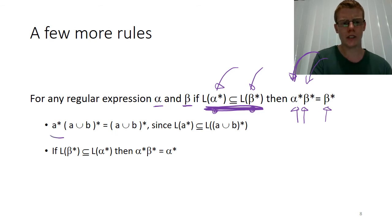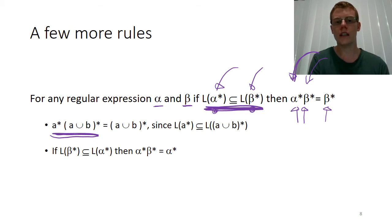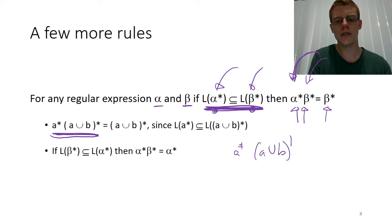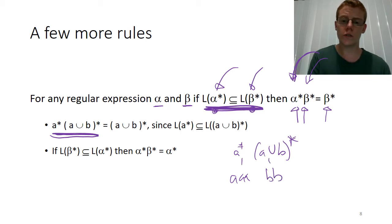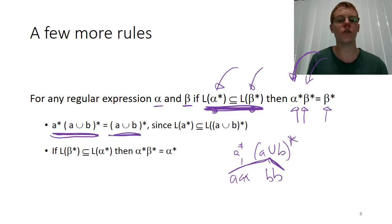Looking at this example, we have A star concatenated with A union B all Kleene-starred. We can get rid of the A star out the front because it is a subset of A union B star. For a more concrete example, if we generated the string of three A's followed by BB using A star and then A union B star, we could have also generated that entire string just using A union B star. So the A star at the front didn't add anything, meaning we can reduce that regex down to just A union B all Kleene-starred.